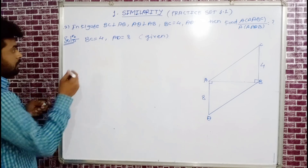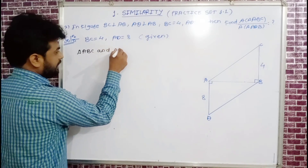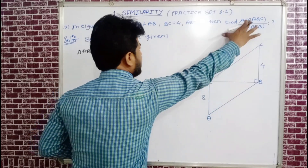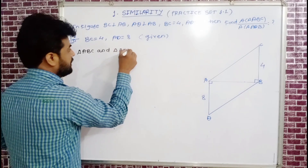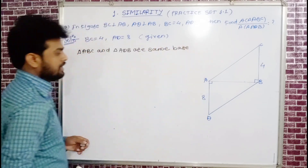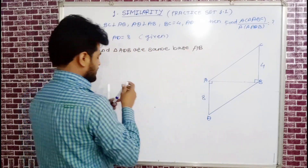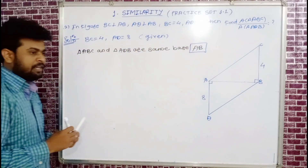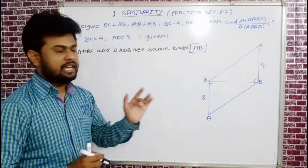We have two triangles in the diagram — first triangle ABC and second triangle ADB. Both triangles share the same base AB. Since the base AB is the same for both triangles, we apply the condition: when bases are equal, areas are proportional to their corresponding heights.